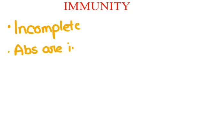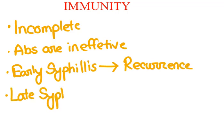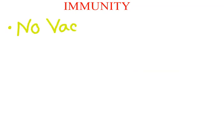Immunity to syphilis is incomplete. Antibodies to the organism are produced but they do not stop the progression of disease. Patients with early syphilis who have been treated can contract syphilis again. Patients with late syphilis are relatively resistant to reinfection. There are no vaccines for syphilis, as the outer membrane of Tryponema pallidum has too few surface proteins for an antibody to be effective.